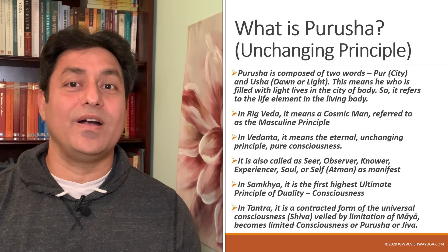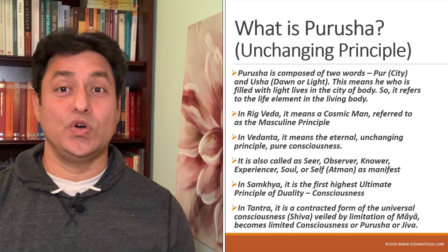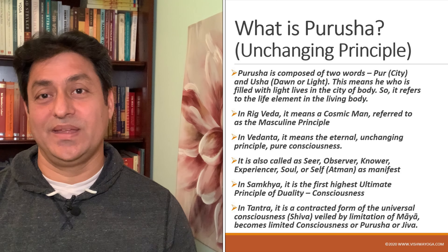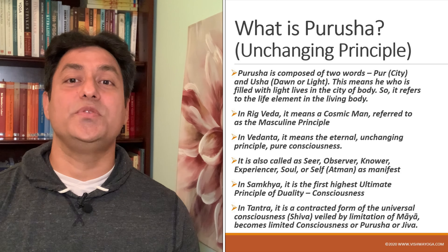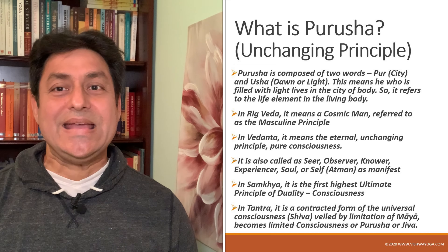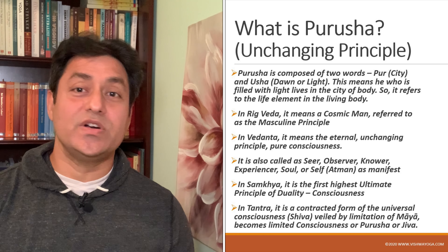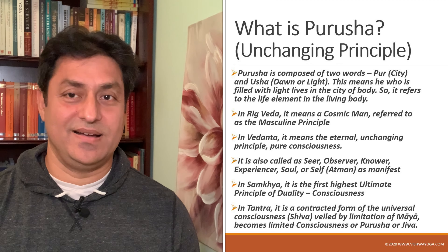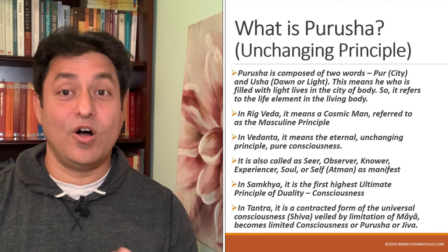It is also called the seer, observer, knower, experiencer, soul, self or atman as manifest. In Sankhya, it is the first highest ultimate principle of duality, called the consciousness principle. In Tantra, it is a contracted form of universal consciousness — Shiva veiled by the limitation of Maya becomes limited consciousness or Purusha, also called Jiva.